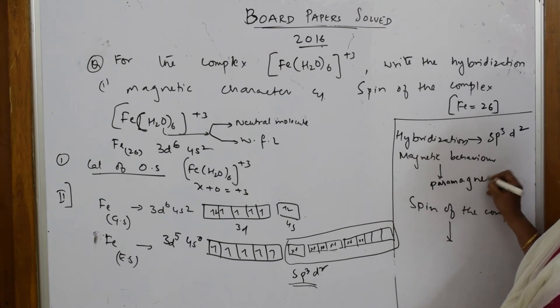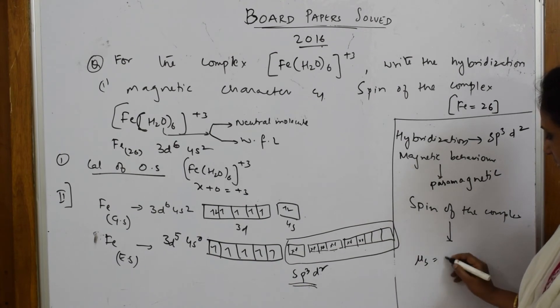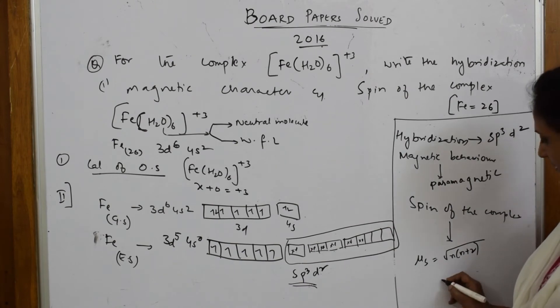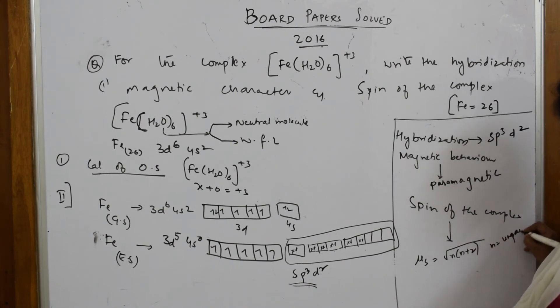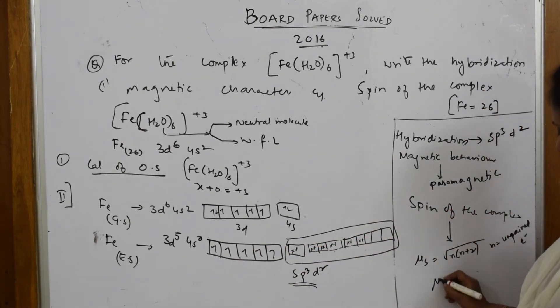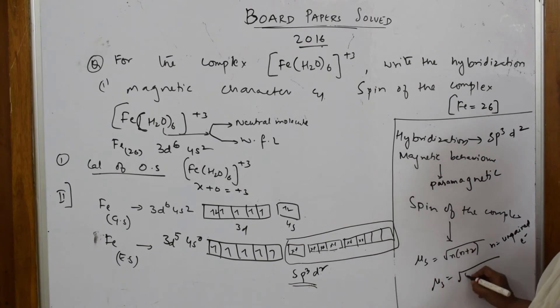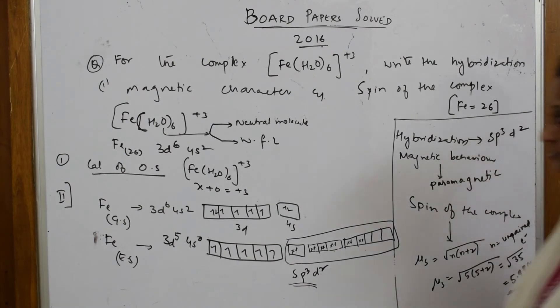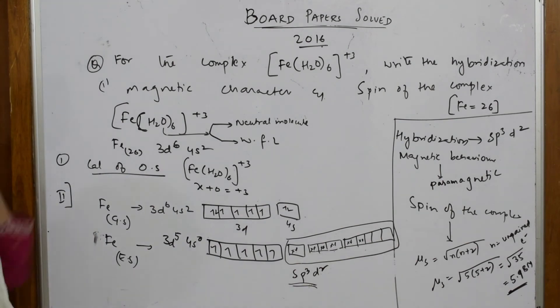All are unpaired electrons, hence the magnetic behavior is paramagnetic. I have to calculate spin of the complex: mu s = root(n(n+2)), where n is unpaired electrons. We have five unpaired electrons, so mu s = root(5×7) = root(35) = 5.9 Bohr magnetron. This is your answer.